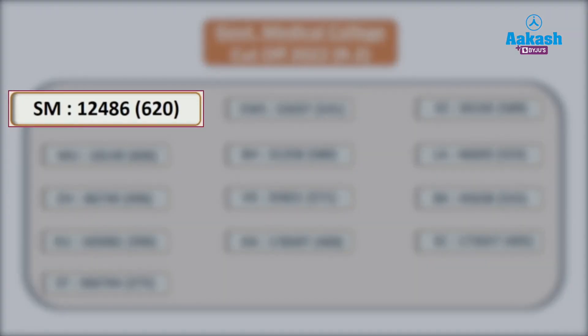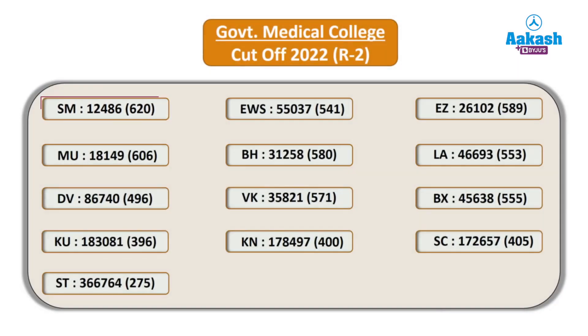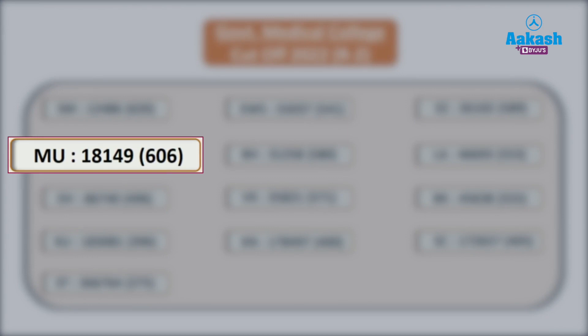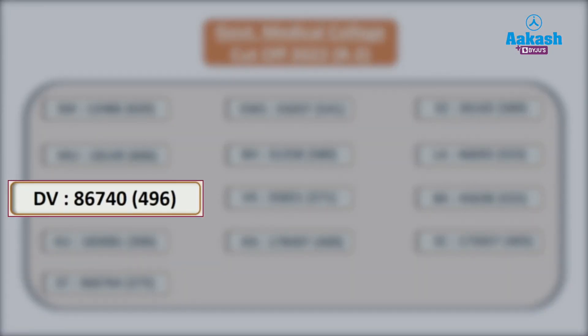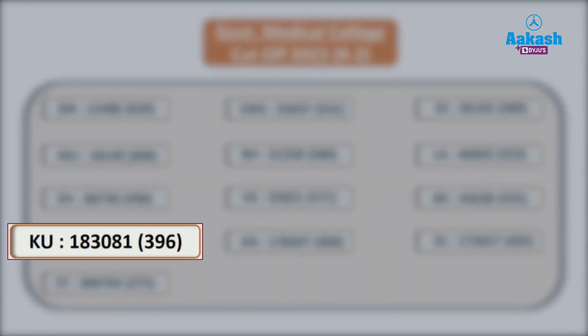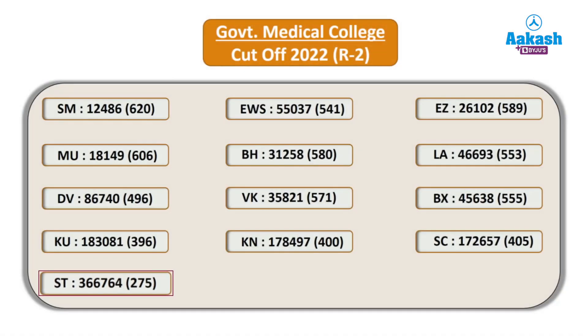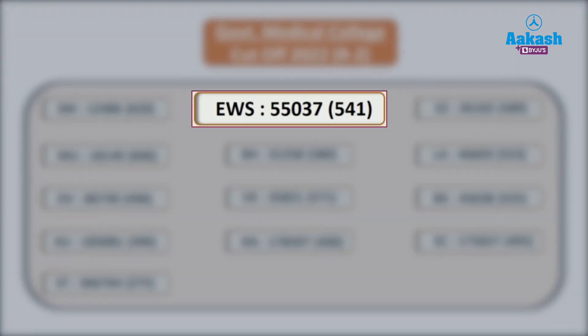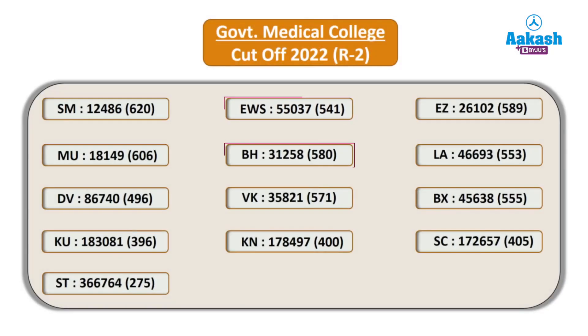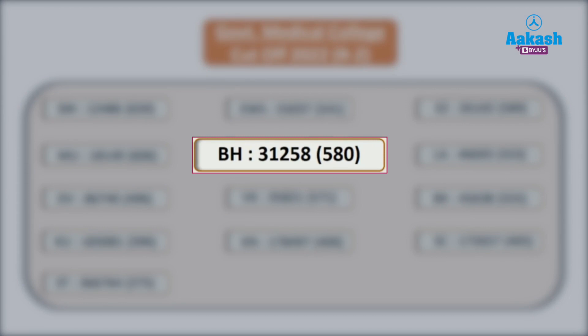For the SM (State Merit) category, the rank was 12,486 and the marks were 620. For MU (Muslim) category, rank 18,149 and marks 606. For DV (Dheevara) community, rank 86,740 and cutoff marks 496. For KU (Kudumbi) category, rank 1,83,081 and marks 396. For ST category, rank 3,66,764 and marks 275. For EWS, rank 55,037 and marks 541.